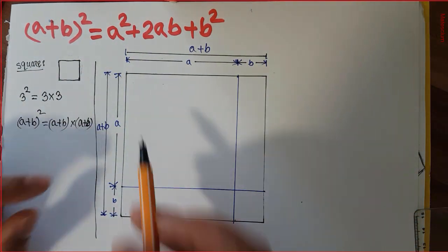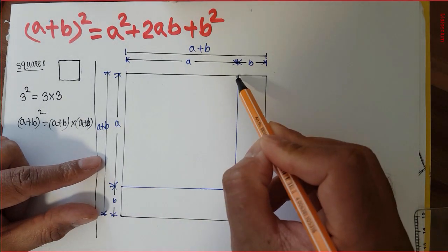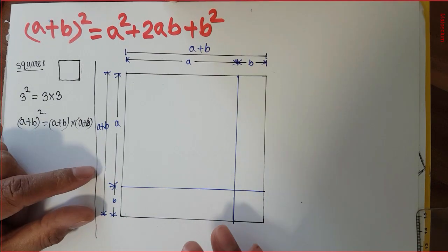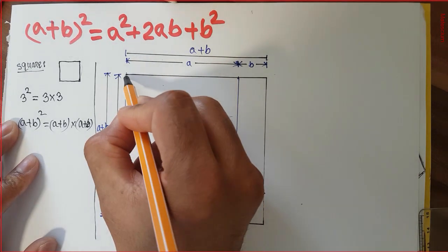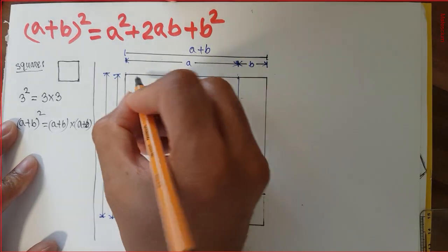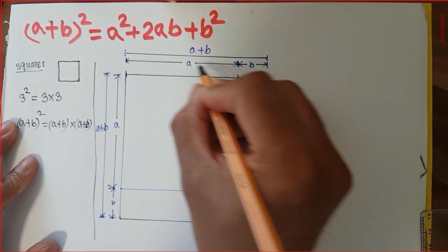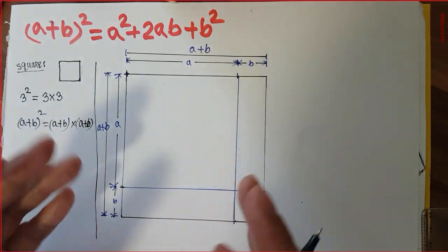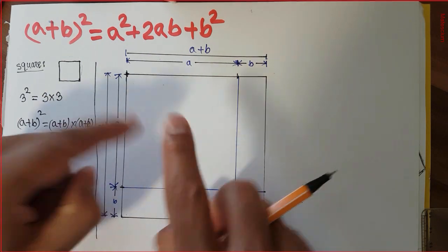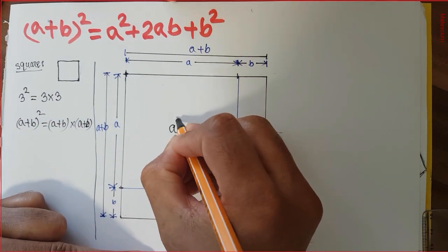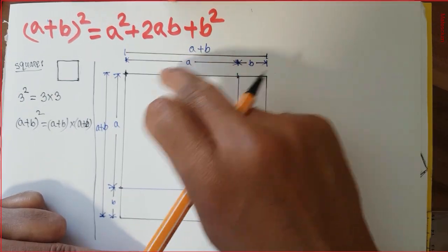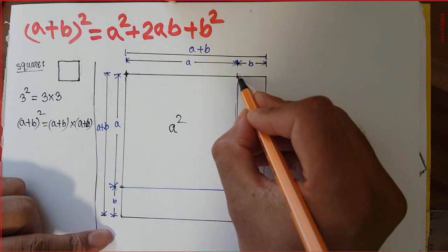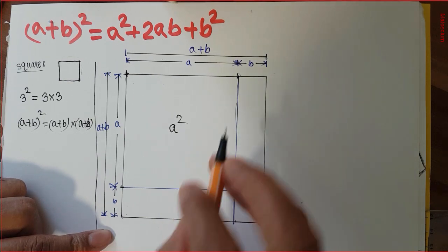Out of these four different areas, this is one large square, this is a rectangle, this is another rectangle, and this is a small square. Notice that the side length of this large square is 'a' — from here to here is 'a', and the other side from this point to that point is also 'a'. So the surface area of this large square is a × a, which is a squared.